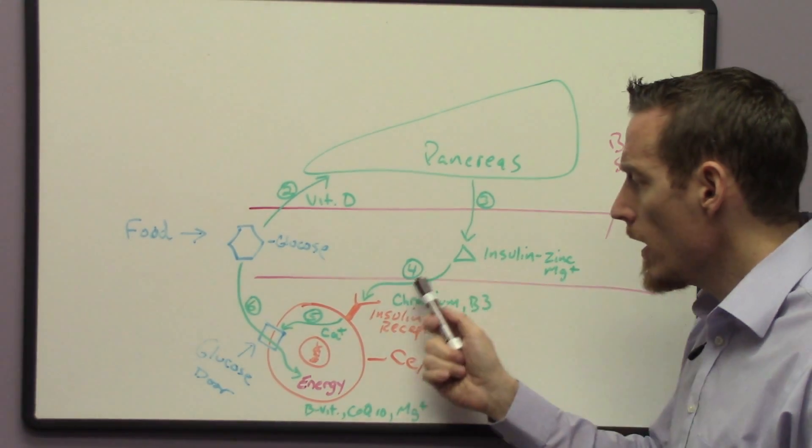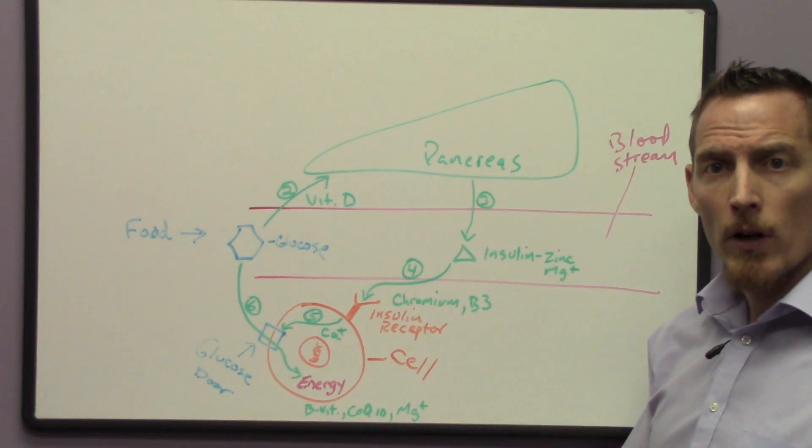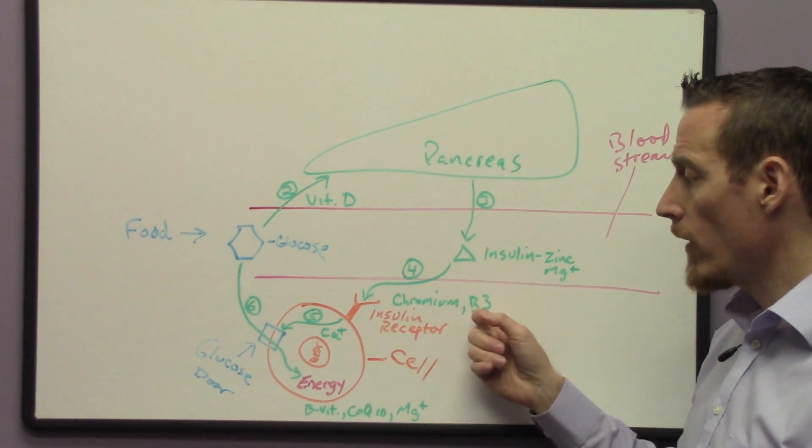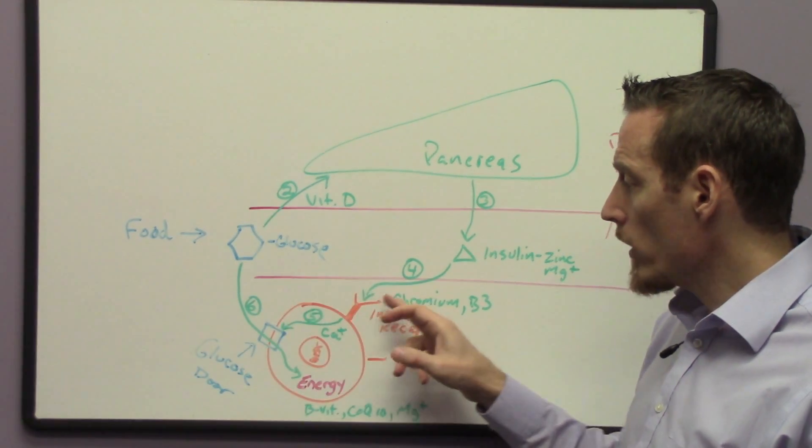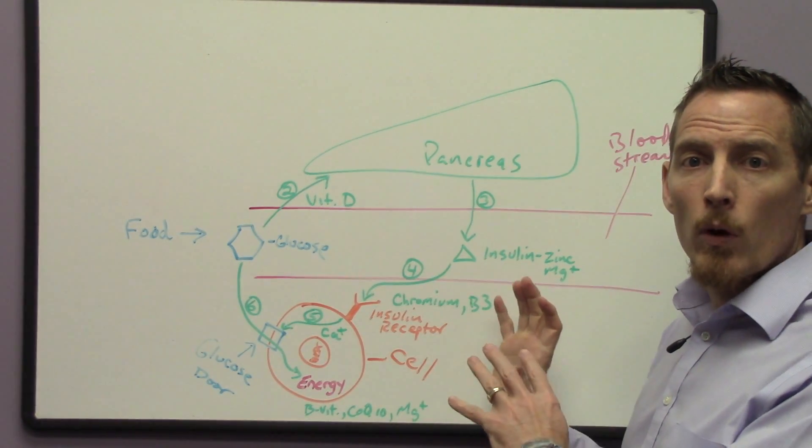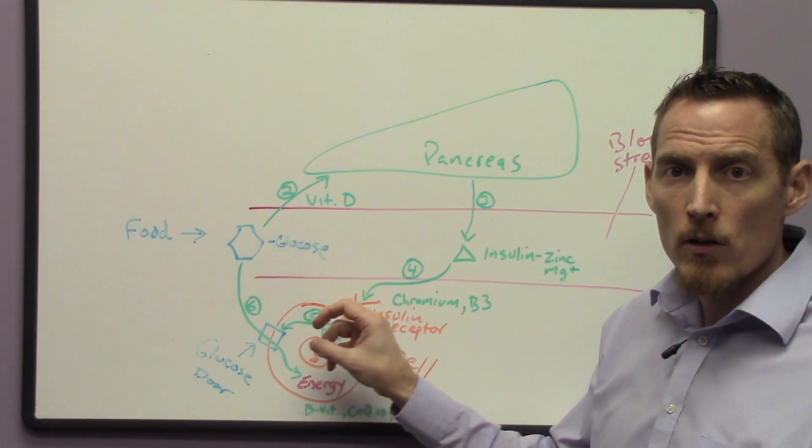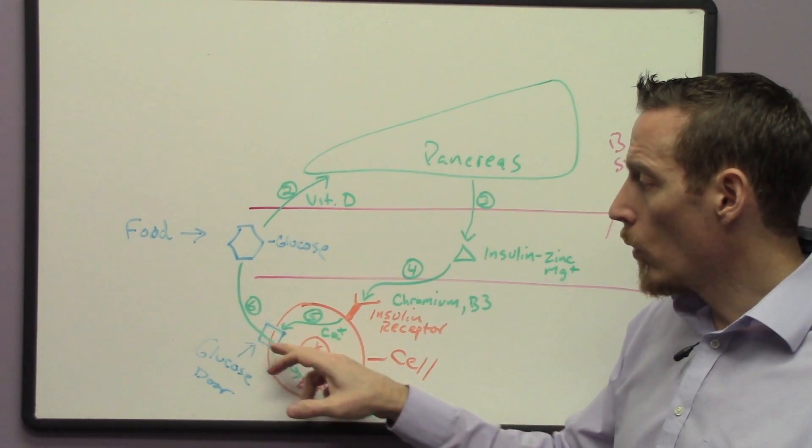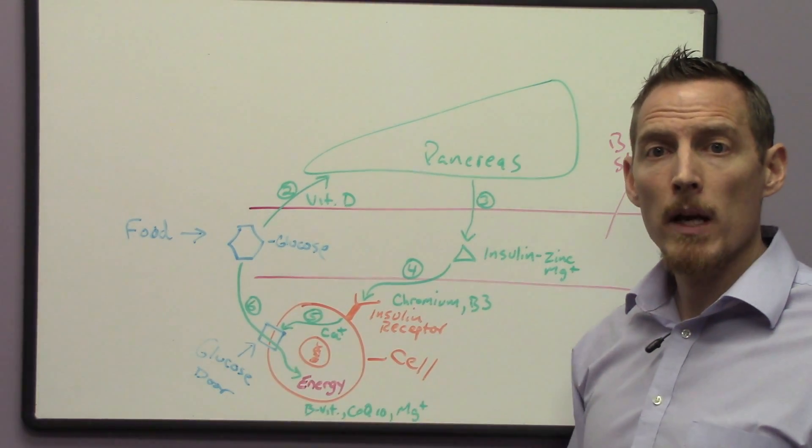We then said that for that insulin to communicate with your cell, that required a couple of other nutrients, chromium, a mineral, and vitamin B3, also known as niacin. And we said that once that insulin receptor is activated, it sends a message through the cell and opens a doorway in the cell that allows that sugar, that glucose to come into your cell and this is how we make energy.